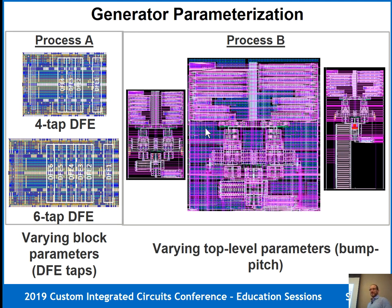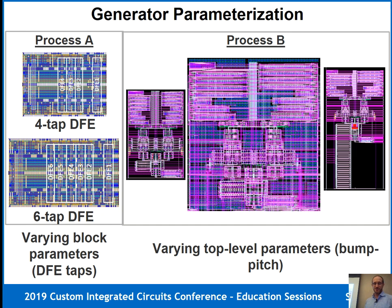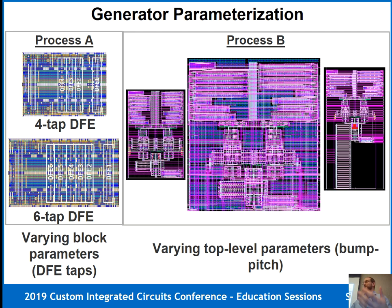Just to prove these are really generators: here's a decision feedback equalizer generator for high-speed SerDes — one case with four taps, another with six taps, and there's actually some rerouting that has to be done to make it work, not just a straightforward extension. Another example from Silicon Photonics collaborators: because photonic devices were constantly changing, the bump pitch for hybrid bonding changed all the time, so a generator that knows how to rearrange the circuit to match varying bump pitch produces quite wild configurations — all instances from one single generator.